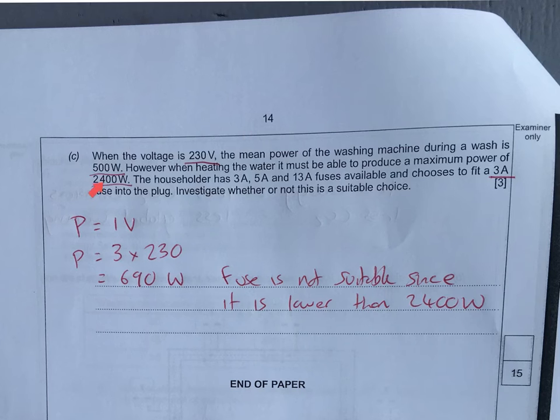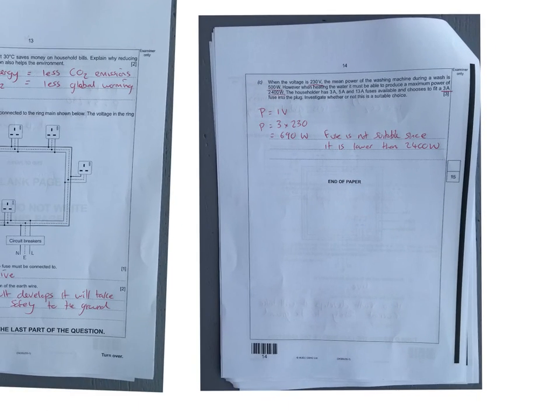It says there is maximum running at 2400 watts, so this fuse is not going to be good enough. So fuse is not suitable since it's lower than 2400. It's not asking which fuse you should use, so therefore you wouldn't have to work that out. I should imagine it's something like a 30 amp fuse, and 13 times 230 is going to tell you then what the maximum wattage is, what the maximum power. And that's the end of that paper. Hopefully you've got something from that.